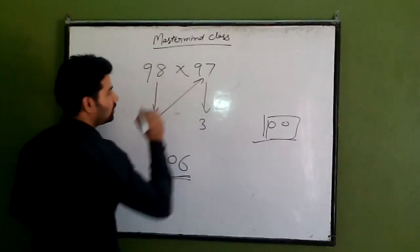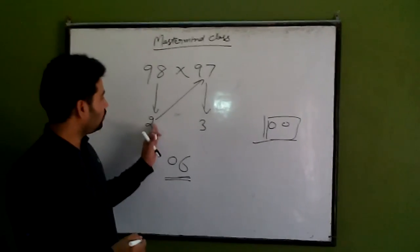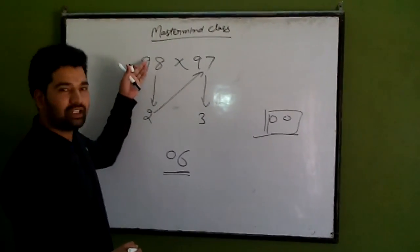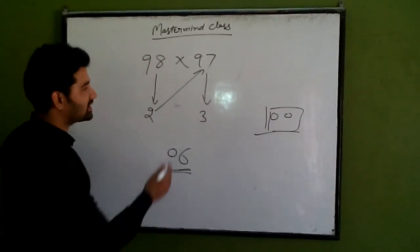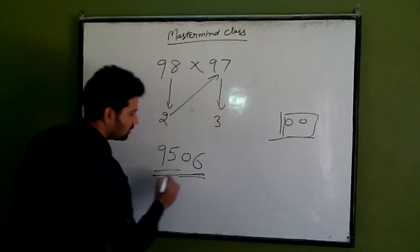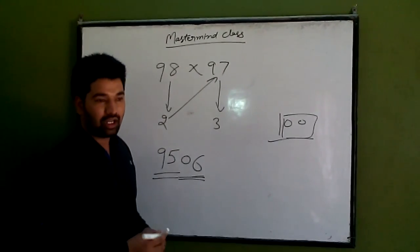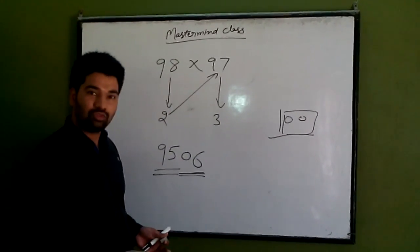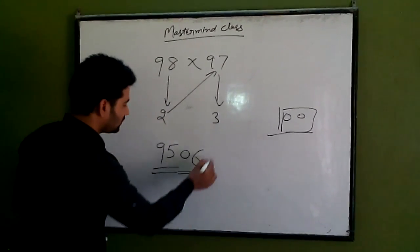Now we have to subtract 2 from 97 or 3 from 98. If we subtract 2 from 97, we get 95. And if we subtract 3 from 98, also we get 95.